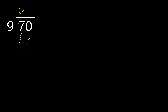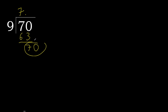Subtract 7. That is not a whole number, therefore complete. Always complete with 0. Here, complete with a decimal point. 70, 9 multiply by 7 is 63.